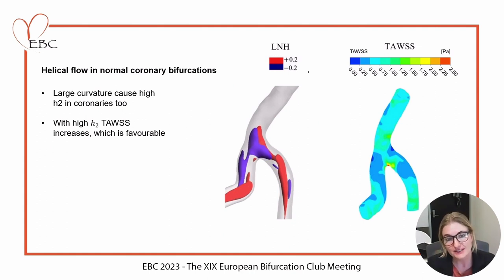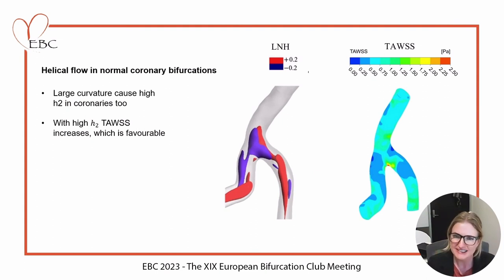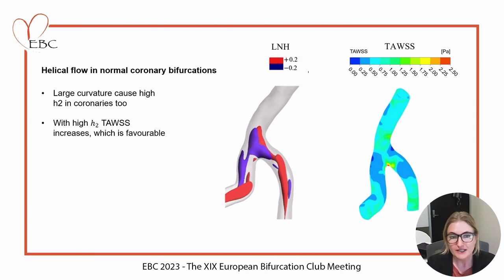With increasing helicity intensity, time-average wall shear stress actually increases as well, moving away from the dark low areas — which are very unfavorable — toward more physiologically normal areas. So a little bit of curvature and helical flow is actually favorable.